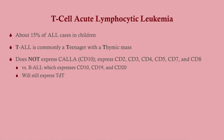T-cell ALL is about 15% of cases in children - think of a teenager if they come in and you diagnose them with ALL. It is CALLA negative, and the markers it expresses are the T-cell markers: CD2, 3, 4, 5, 7, and 8. Versus B-cell ALL, which will express CALLA as well as CD19 and CD20. T-cell ALL will still express TdT, though.